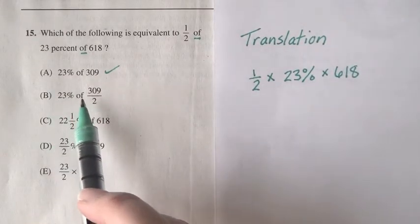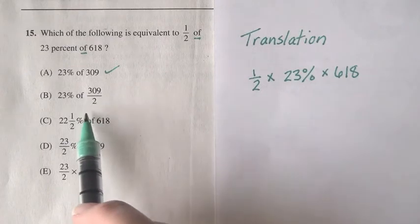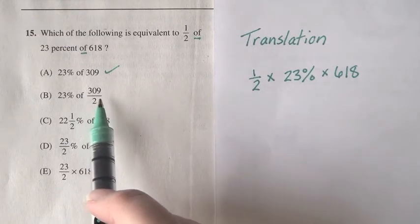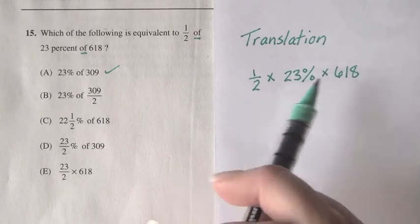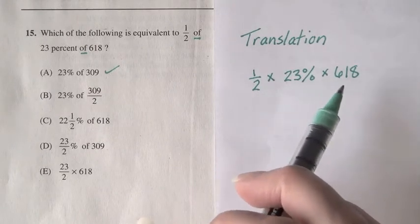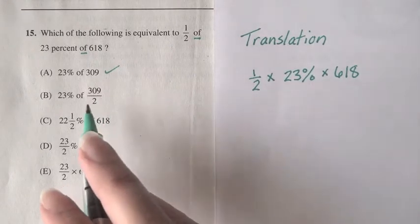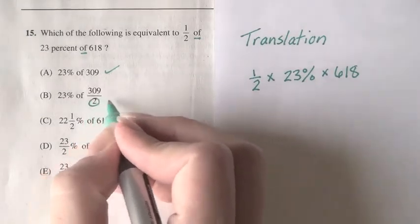For B, we have the same 23% of 309, but divided by two for no reason. The 309 already comes from one-half times 618. There's no additional one-half to merit this division, so that's out.